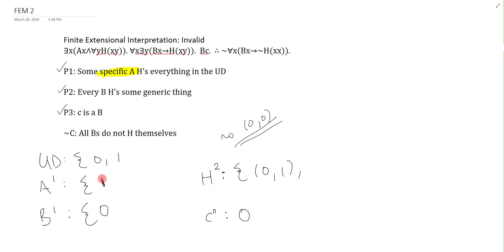Now, I'll change it to 1. And so my specific A is 1. And that would mean that my A, my 1, has to H everything in the universe of discourse. So my 1 has to H 0, and my 1 has to H 1. So I'll put 1, 0, 1, 1.